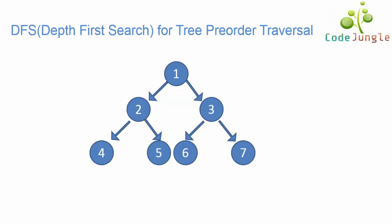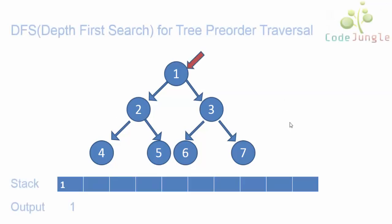So to begin with, we are going to use this specific tree for pre-order traversal. We will start with the root node. Here the root node is displayed in the output and at the same time is pushed into a stack.